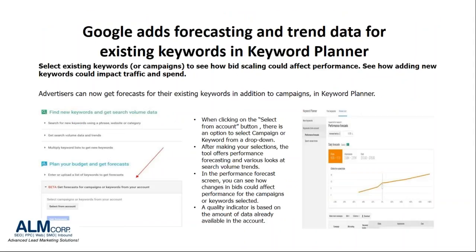Amalia, you had some updates to share as well? I do, in fact. Thank you very much, Chris. I want to share this current article - it's called "Google Ads Forecasting and Trend Data for Existing Keywords in the Keyword Planner." By selecting existing keywords or campaigns, it allows you to see how bid scaling could actually affect performance.